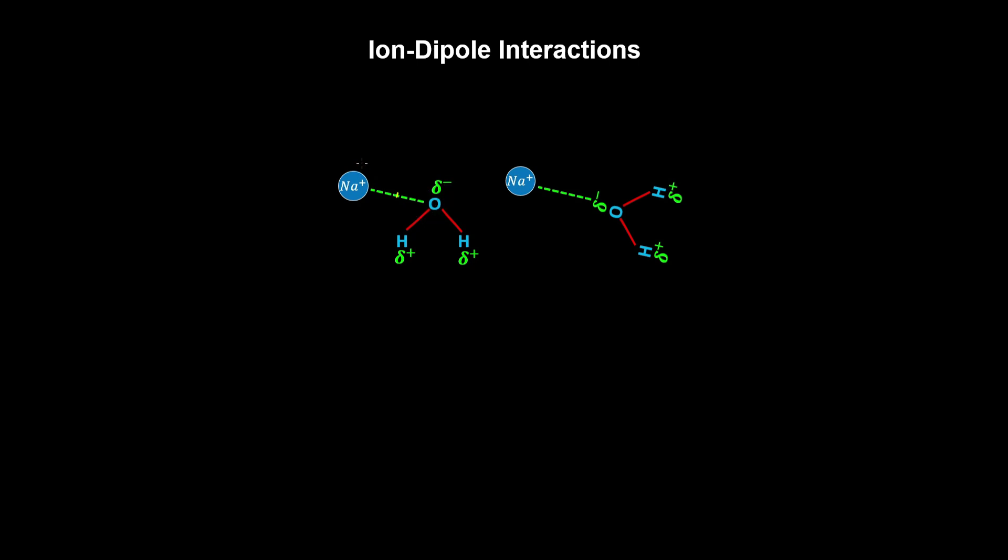Because you have a loss of an electron, which gives an atom a full charge, compared to dipole-dipole interactions, where the electrons spend more time around the particular atom, so you get a partial charge.